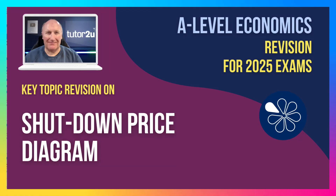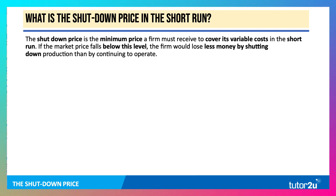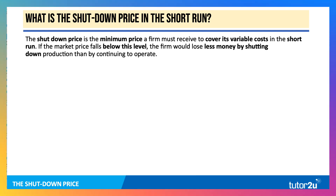Let's have a look at a key micro diagram of the concept of the shutdown price. The shutdown price is essentially the minimum price a business must get to cover its variable costs in the short run. If the market price falls below that level, the firm might actually lose more money by carrying on, and lose less money by shutting down some or all of their production.